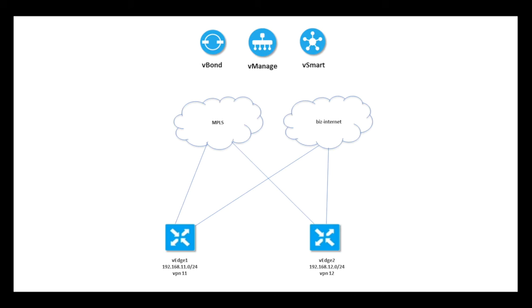In this short video, we will discuss how to do route leaking between VPNs in the Viptela SD-WAN fabric. Viptela provides the ability to segment the network using VPNs. With the use of different VPNs, the traffic is completely isolated between each other in the overlay network.